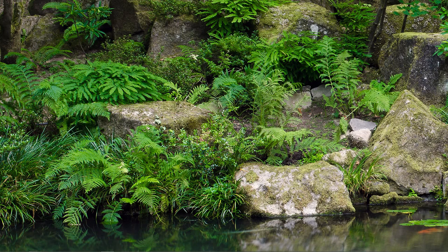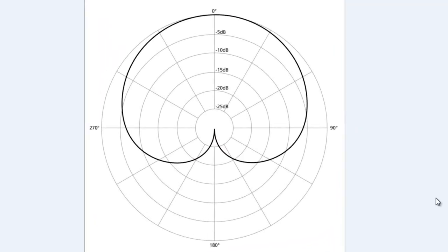Mics come with a variety of patterns, and this is one of the main things you want to look out for when buying a microphone. The first pattern is cardioid. The capsule picks up just in one direction, giving you about 180 degrees of coverage with a little bit to the back. It's called cardioid because it forms a kind of heart-shaped pattern.